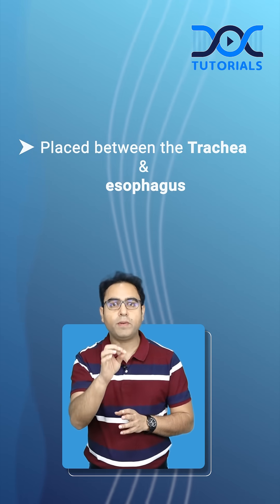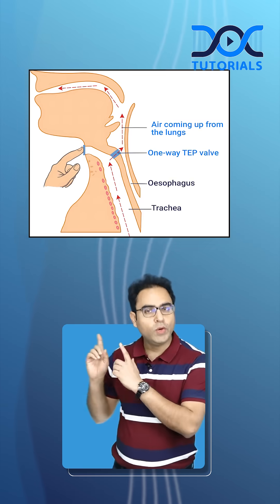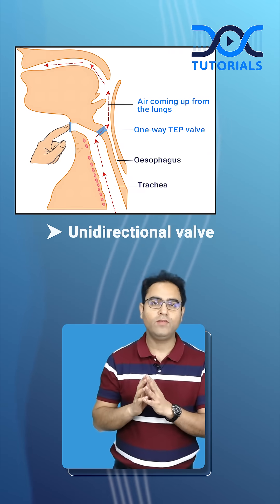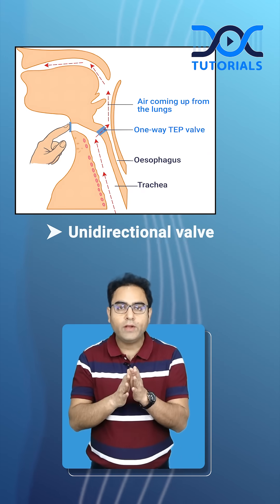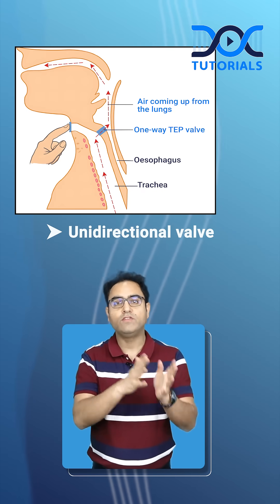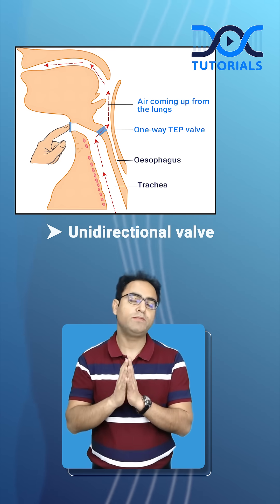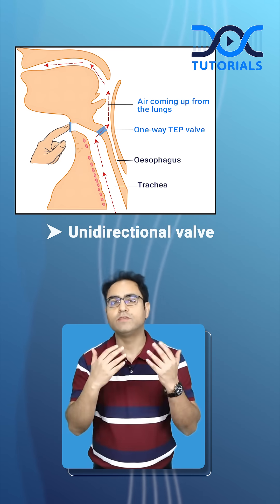Is it an external device or internal device? This is an internal device. This is surgically placed between the trachea and esophagus. What type of device is it? This is a unidirectional valve which sends air from the trachea to the esophagus, and that air goes upward and helps the patient to produce sound.